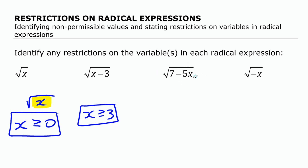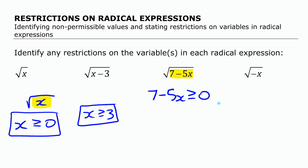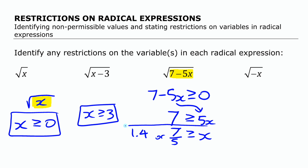For this one, it may be harder to see the restriction right away. So we write an inequality saying that the expression underneath the radical sign — seven minus five x — has to be greater than or equal to zero. We solve this inequality by moving terms: seven minus five x ≥ 0 becomes seven ≥ five x, and dividing both sides by five gives x is less than or equal to seven fifths, or 1.4 in decimal form. That's the restriction on the variable in that expression.